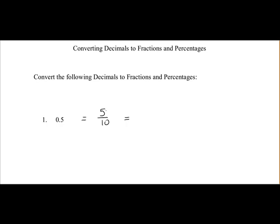If we break that down to its lowest form, 5 into 5 goes once, 5 into 10 goes twice, it is equal to 1 over 2 or a half.